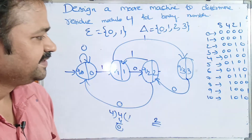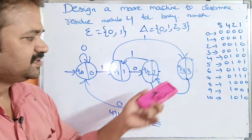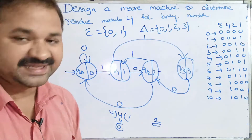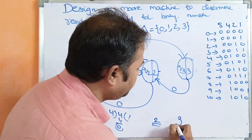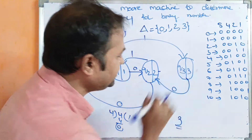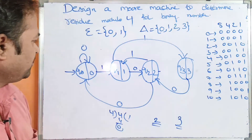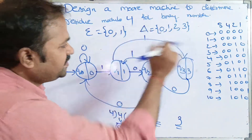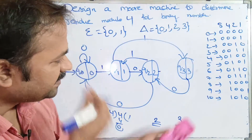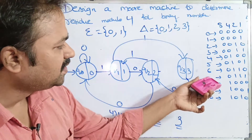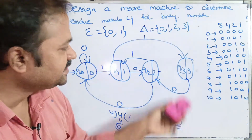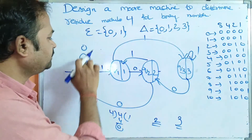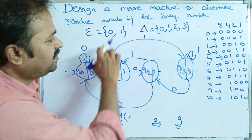For 7, which is 0111 in binary: 7 modulo 4 is 3, so we need to be at Q3. Following 0, 1, 1, 1: we reach Q3 after the first three symbols, and then applying one more 1 keeps us at Q3 via a self-loop on input 1.